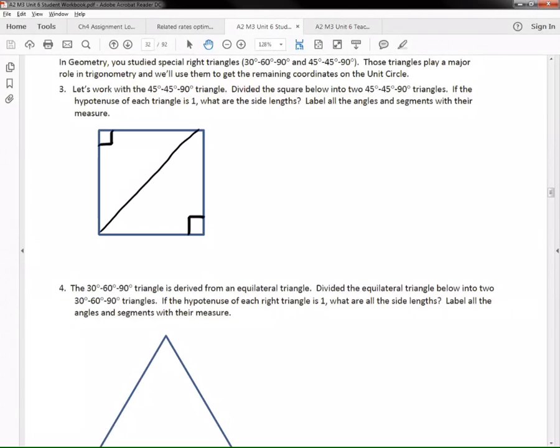And then the directions said that the hypotenuse of the triangles is one, so I'm going to put a one right there. Now, the directions say that we need to find the lengths of these sides, the missing sides in the triangle. Do you guys remember 45-45-90? There's a key. If you remember the key, you can find all the missing sides if you know one of the sides.